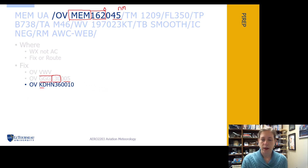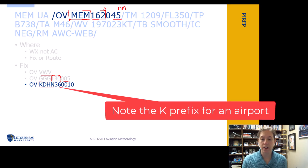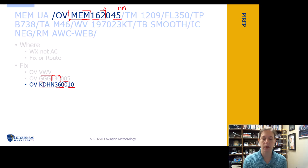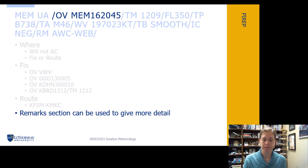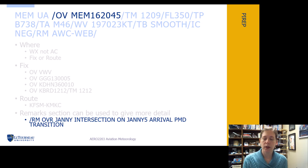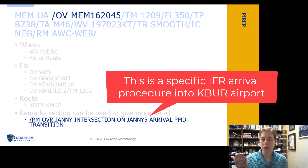This next example references an airport — it has K in front of it, so it's an airport. We're on the 360 degree radial at 10 nautical miles. We can also have a location on a route between two airports, or just a fixed location that doesn't have to be a VOR. In the remarks, we can give more detail — for example, over JANI intersection on the JANI 5 arrival on the PMD transition.